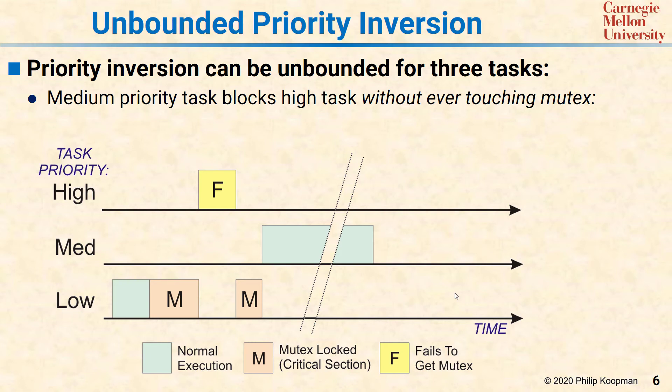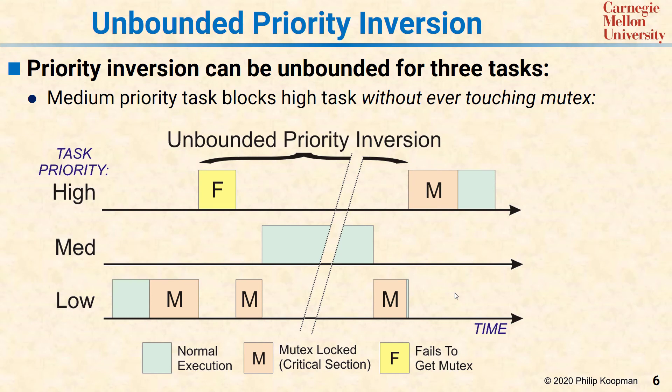If the low priority task didn't have the mutex, this would be fine because medium priority is supposed to run first. But that medium task could have a really long blocking time — it could just run for a very long time. The low priority task holds the mutex that whole time until the medium is done. Only then does the high priority task get to run and acquire the mutex, because it's been waiting on it the whole time. So you have unbounded priority inversion involving this medium priority task that had no idea this was going on and never touches the mutex.